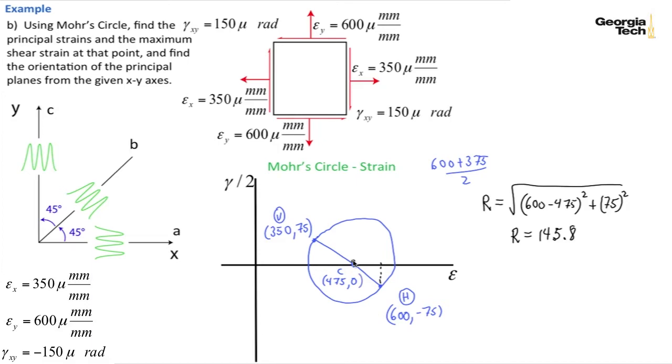And so now I can draw a line up from the center to the very peak of the circle. That's going to be my point, well that will be 475 for the normal strain, and then 145.8, which means that the gamma max over 2 is 145.8, or my max in-plane shear strain is going to equal twice that, or 292 mu radians.